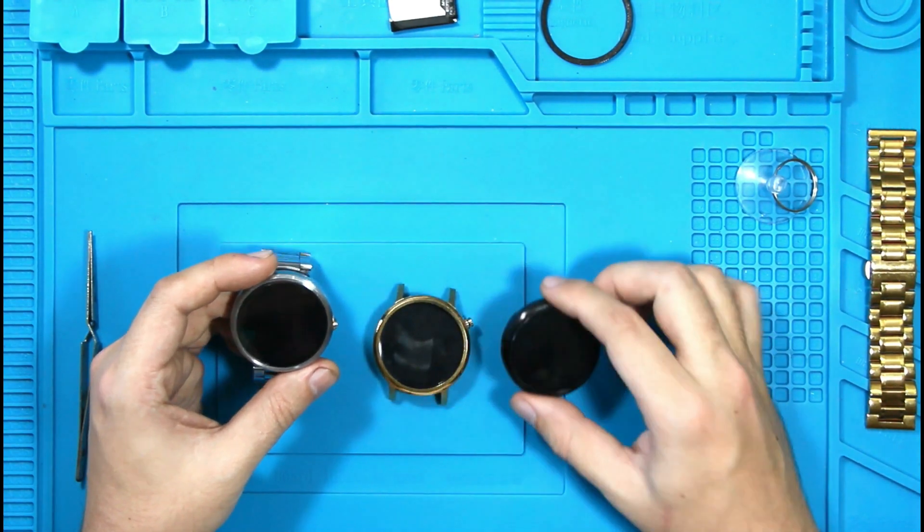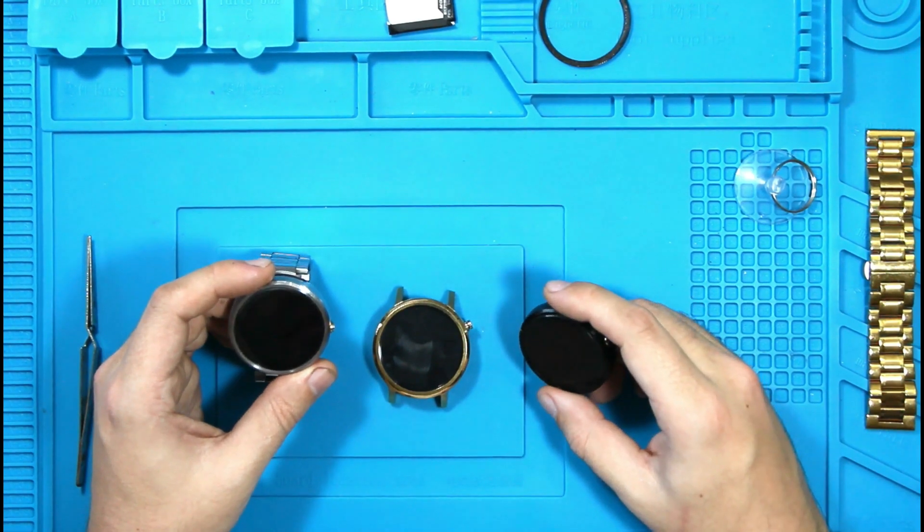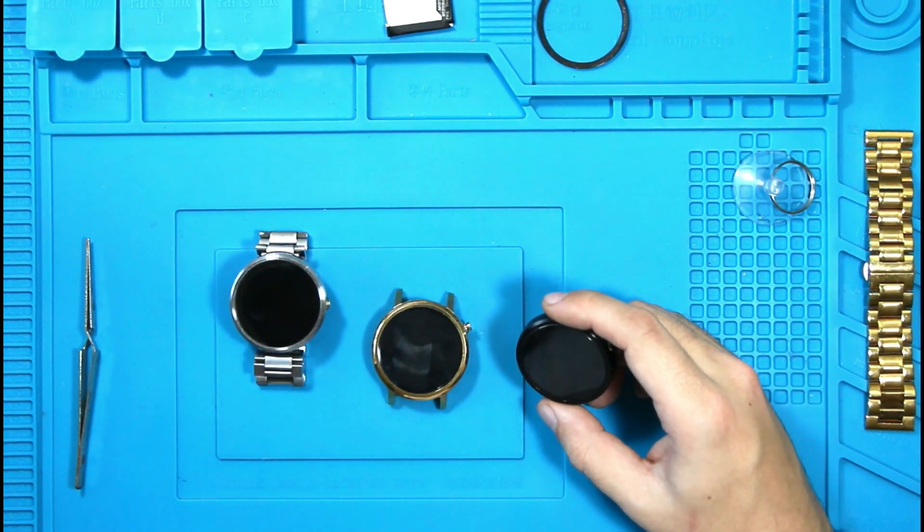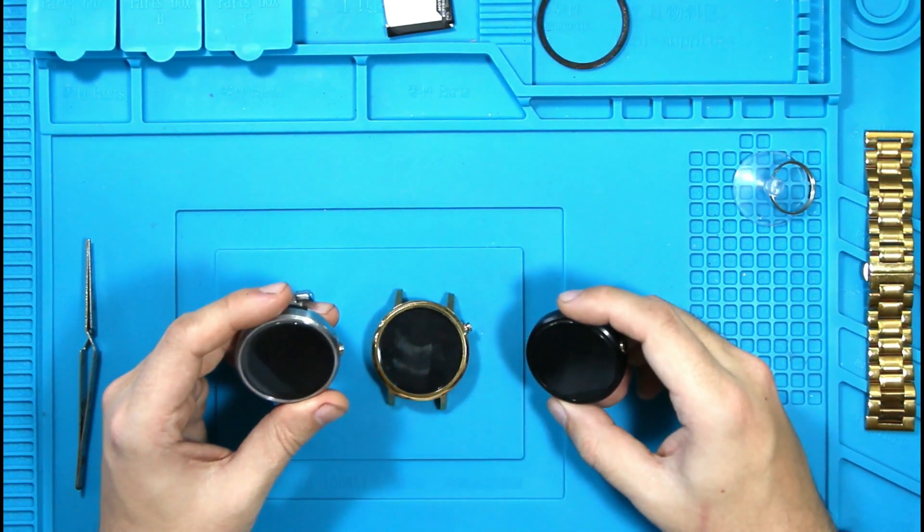So you can tell that when you're actually charging these on the base, they tend to get very hot. That doesn't seem natural to me. And you're supposed to, I don't mean it's not natural for a watch to, or any battery to get hot when it's charging.